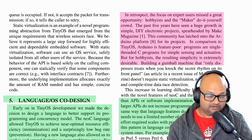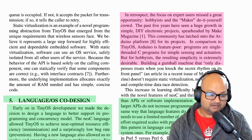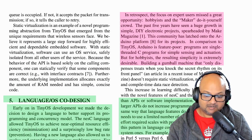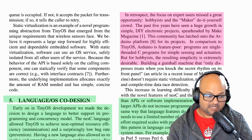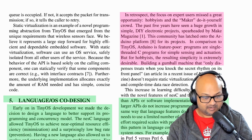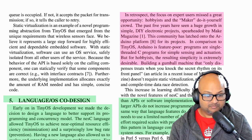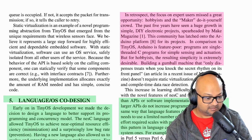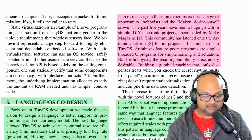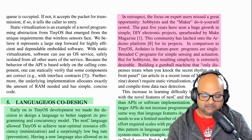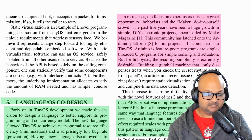This led to a classic 'worse is better' path for the project, where other do-it-yourself solutions like Arduino — even though they were feature-poor compared to NesC and TinyOS — pulled way ahead because they were much more approachable to beginners. This was lesson number two: you want to make the overall system simple enough that it is attractive to beginners.